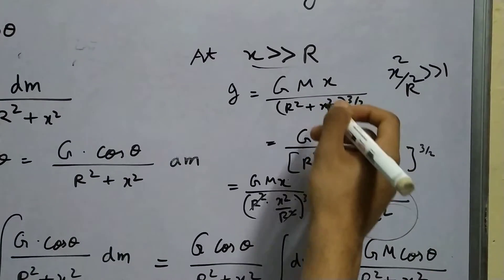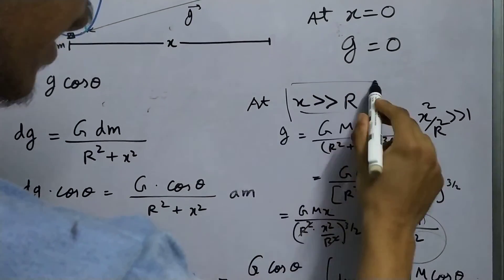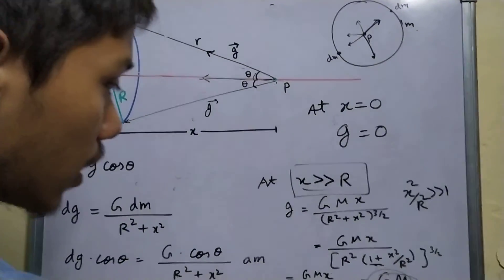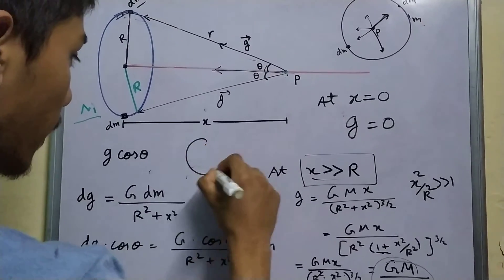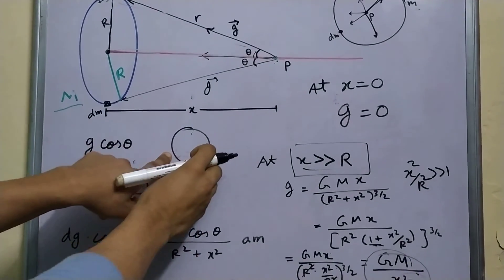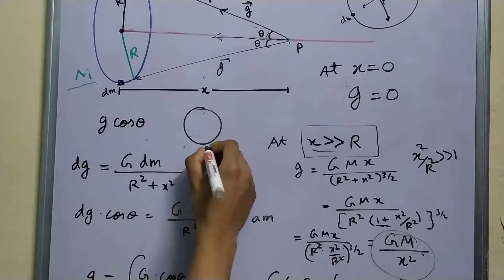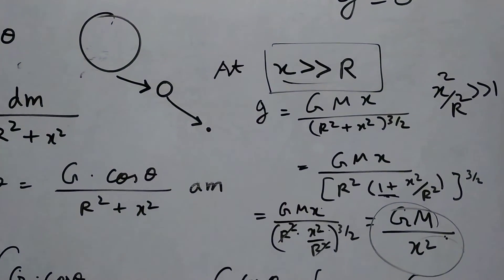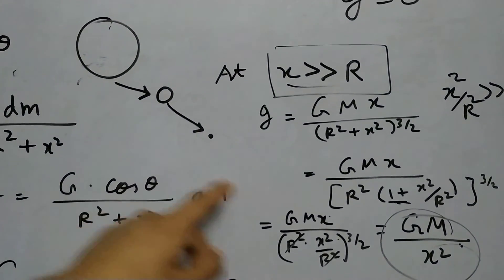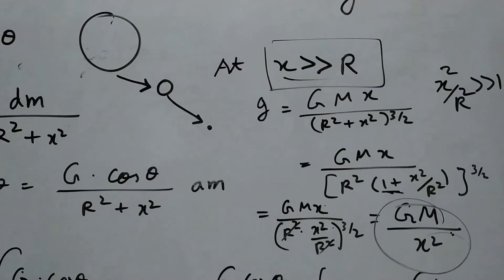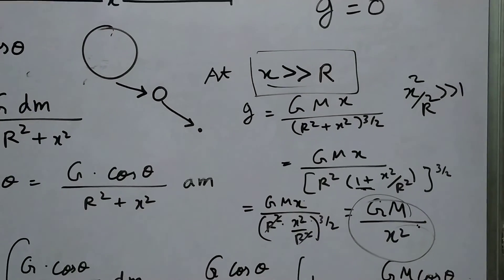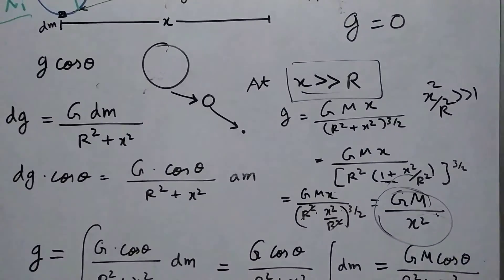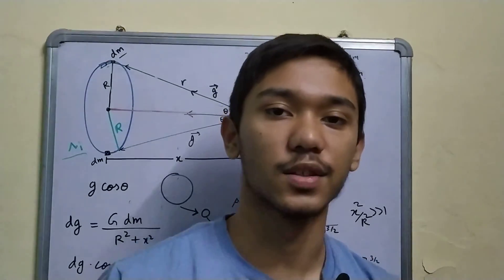What we have seen is that if you are very far away from the ring, the ring behaves like a point mass. If you zoom out far enough, the ring reduces in apparent size and eventually becomes a point, and behaves like one. At x equal to infinity, this field drops down to zero. That's all for today — thanks for watching.